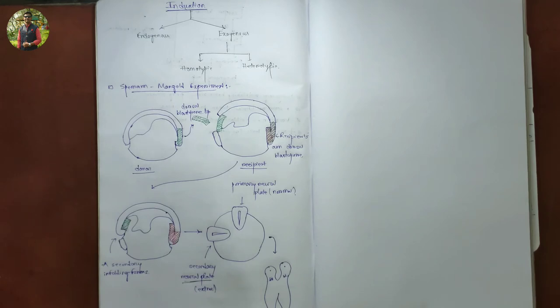The dorsal blastopore lip cells are able to interact with the host tissue to form a complete neural plate from host ectoderm. Eventually, a secondary embryo was formed face to face with its host.